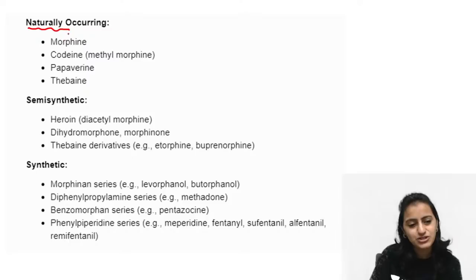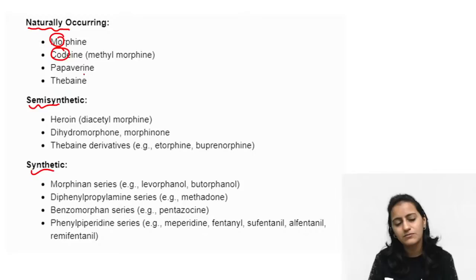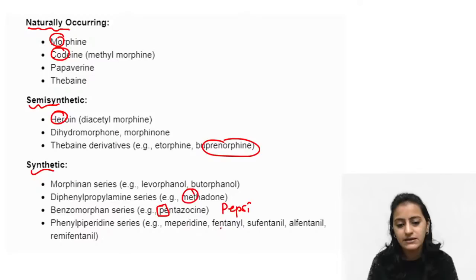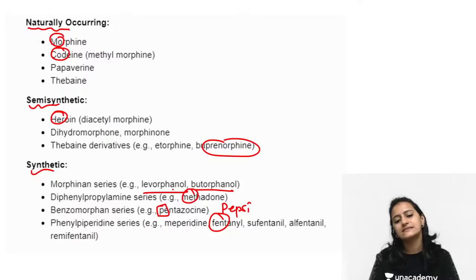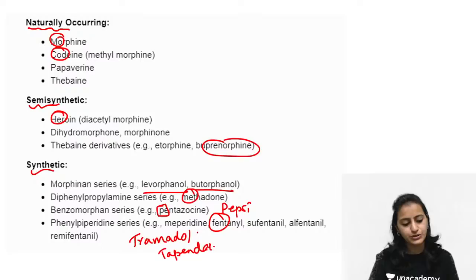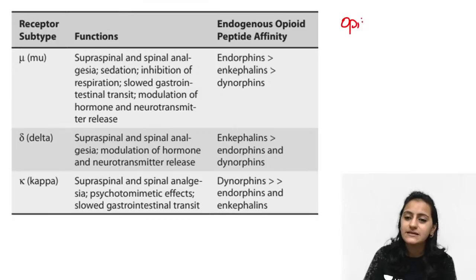Quick review: natural opioids — morning coffee mnemonic. Semi-synthetic — water (H₂O): heroin, buprenorphine, hydrocodone, hydromorphone, oxycodone, oxymorphone. Synthetic — soft drinks (Fanta, Mirinda, Thumbs Up, Pepsi): fentanyl, mepiridine, methadone, tramadol, tapentadol, pentazocine, butorphanol, levorphanol. Remember pantazocin is also synthetic — you can add Pepsi to the soft drinks list.